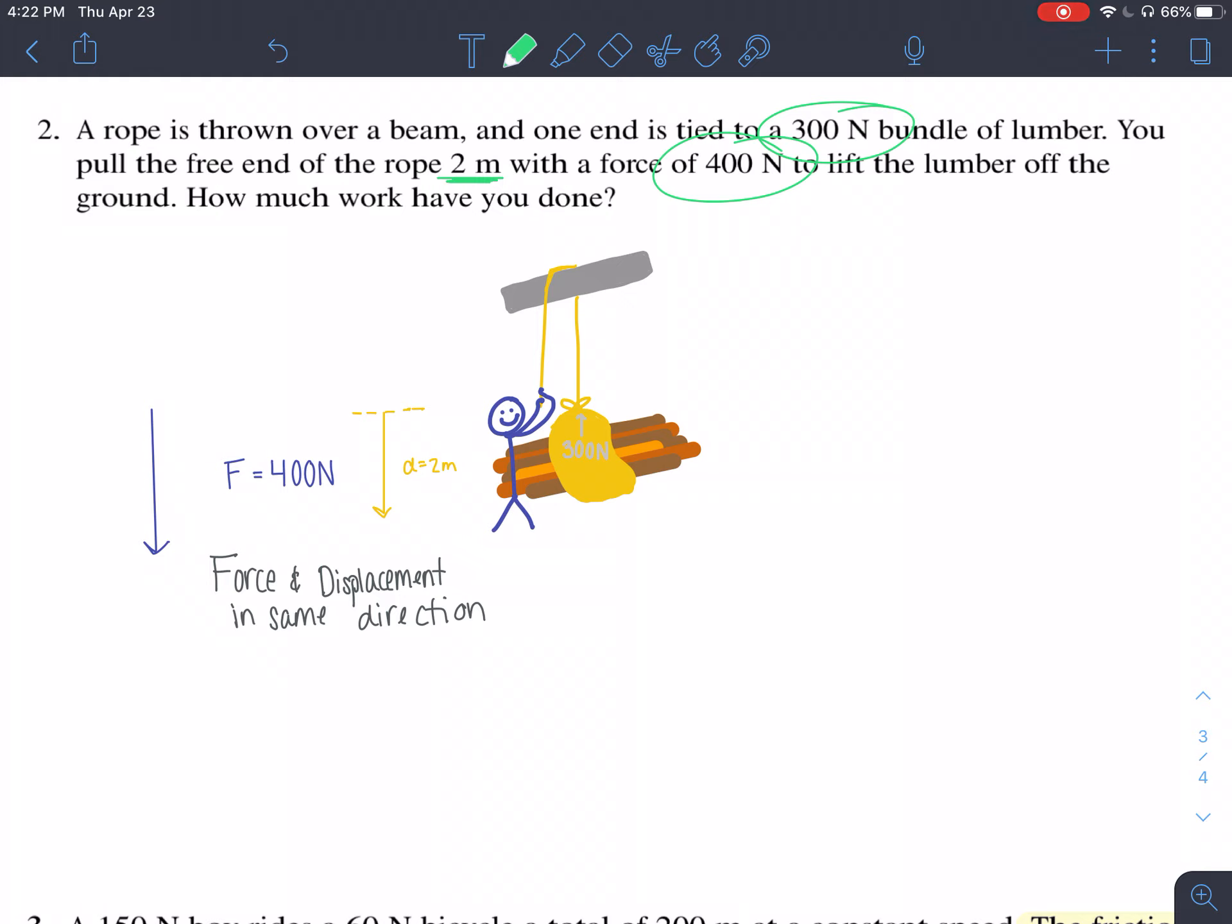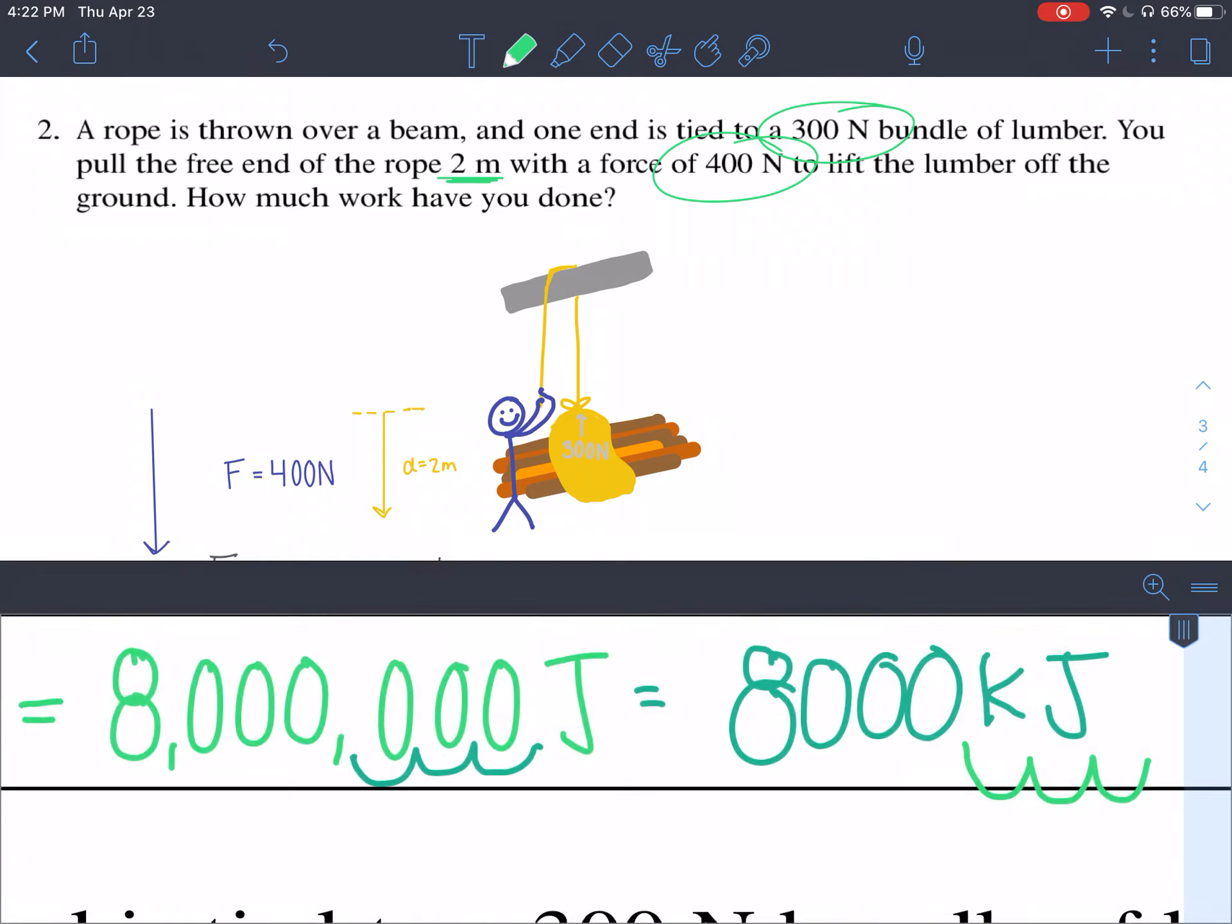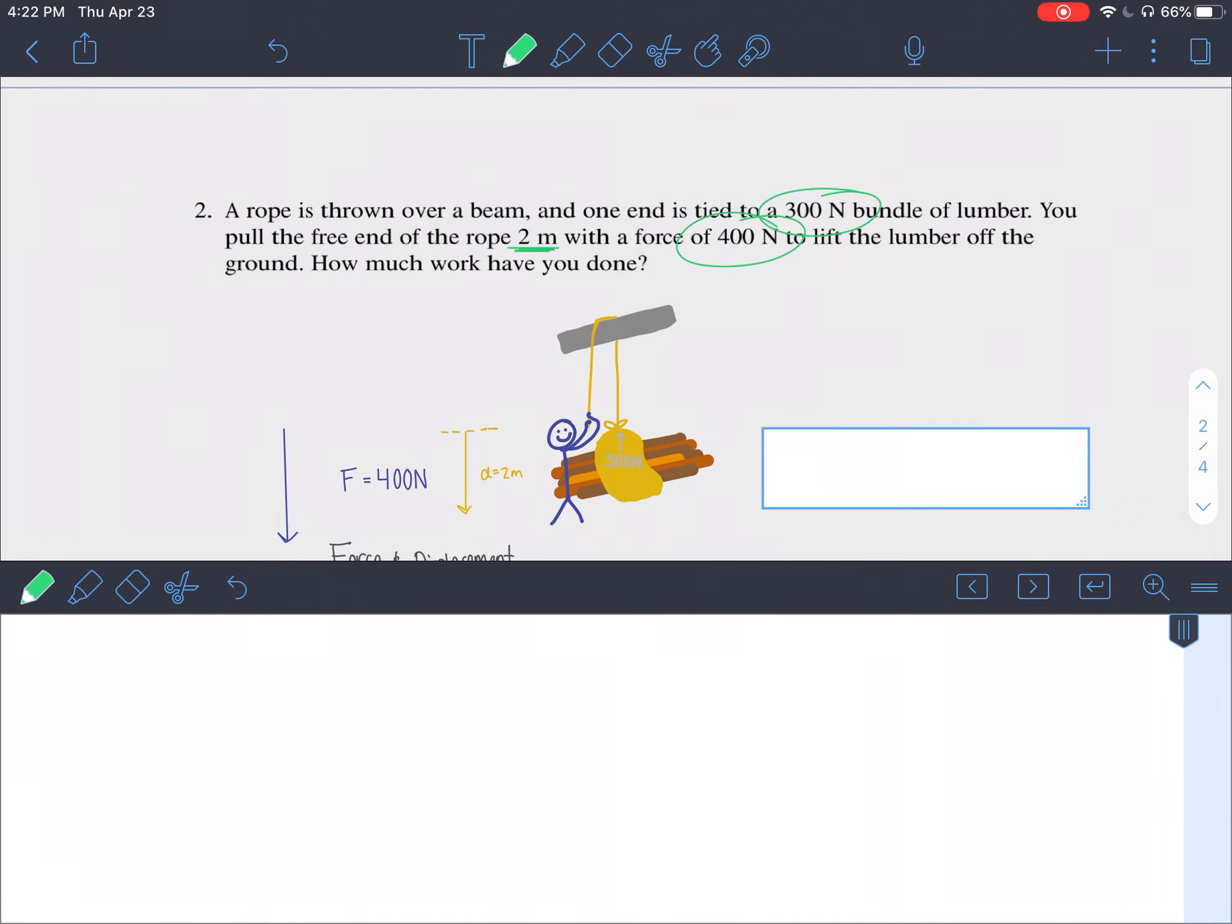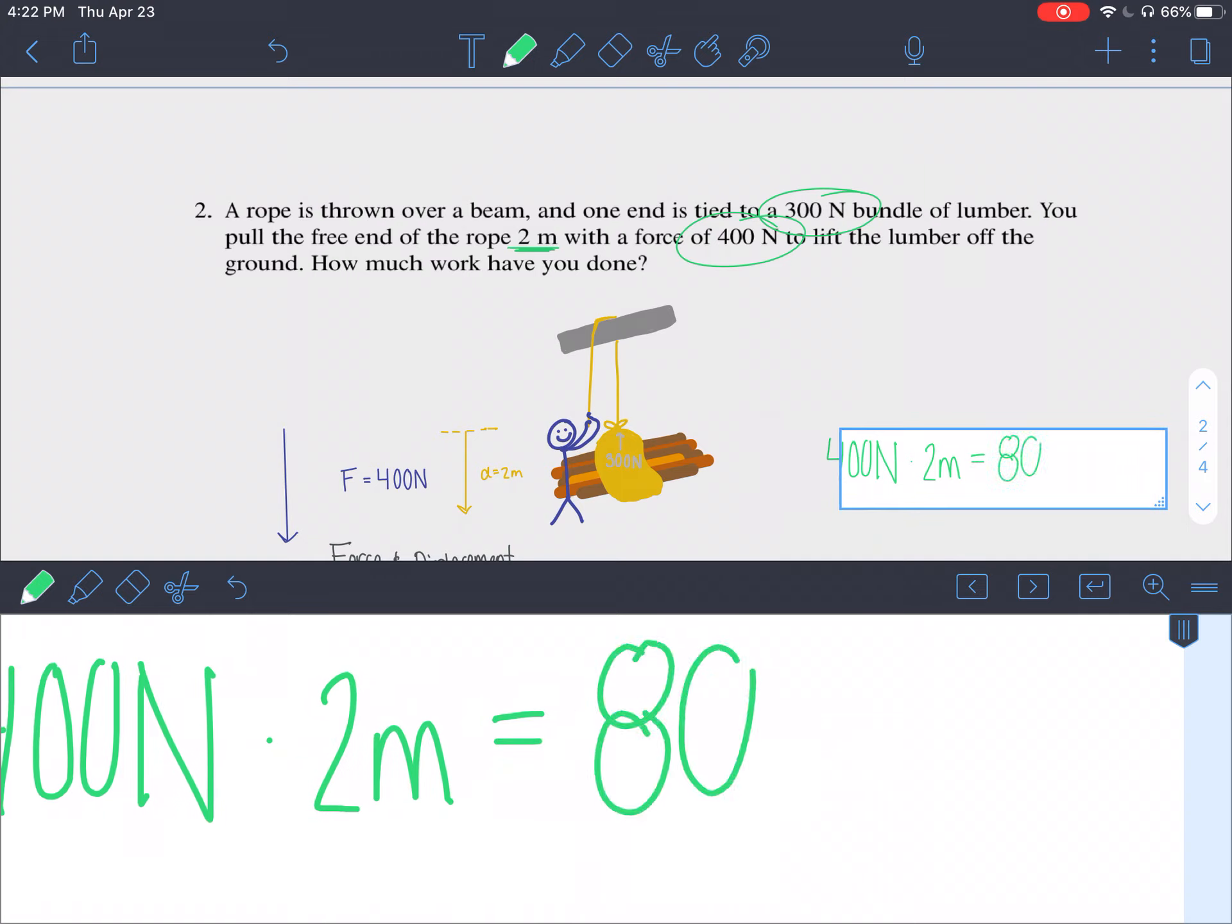Because he pulls the rope two meters down, that means that the force that he is pulling it down is going to be in the same direction. So calculating work here we'll take 400 newtons and times it by two meters to get 800 joules of work.